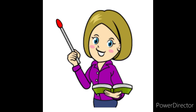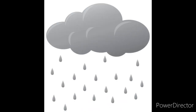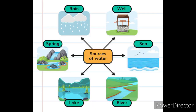Sources of Water. Sources means from where we get water. Rain is the main source of water. We also get water from wells, seas, rivers, lakes, springs, etc.